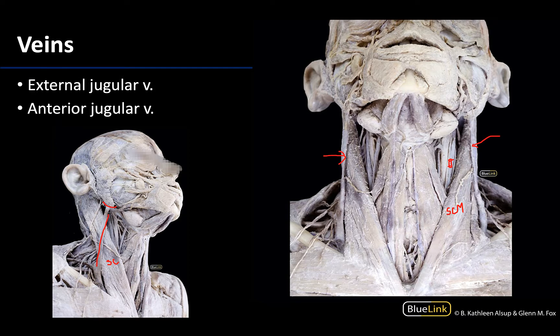The external jugular vein will pick up venous tributaries along the way — you can see one right here, and some that are a bit more anterior. All these veins are trying to get their blood to the superior vena cava to be drained into the heart.